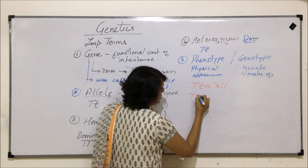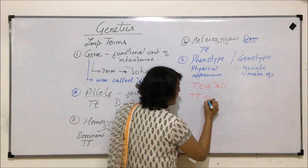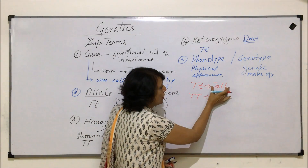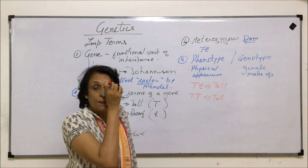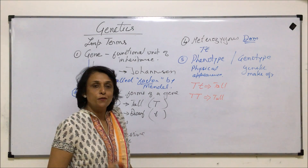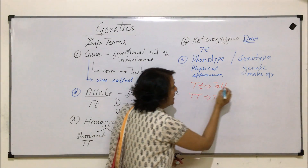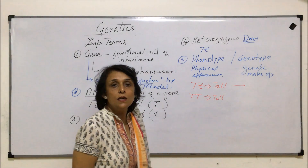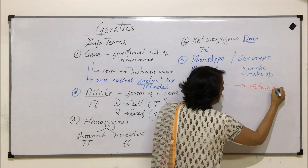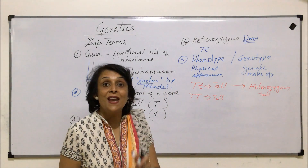Another situation is homozygous dominant — the plant is again going to be tall. So from external appearance, in both cases the plant is tall. But genetically, it is tall because of different reasons. When we are talking of only how it looks — tall or short — we are talking of phenotype. And this plant is tall because it is heterozygous, so we write it as heterozygous tall.